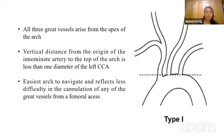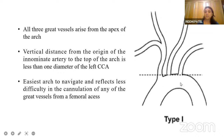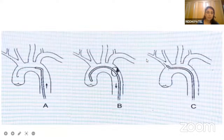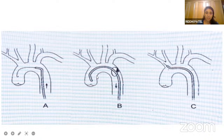We will now look at the different types of aortic arches. In type 1 arch, all three great vessels arise from the apex of the arch. The vertical distance from the origin of the innominate artery to the top of the arch is less than one diameter of the left CCA. This is the easiest arch to navigate and reflects the least difficulty in cannulation of any of the great vessels from the femoral axis. Here we can see the diagnostic catheter and guide wire - when introducing the diagnostic catheter into the ascending aorta, we rotate it anticlockwise and it will directly go to the innominate artery.